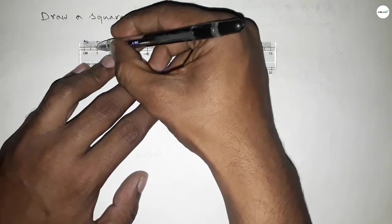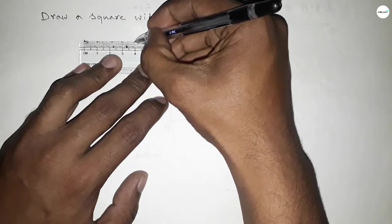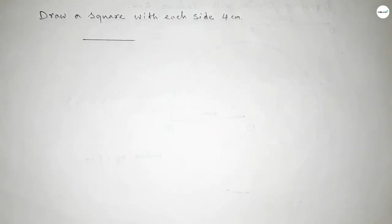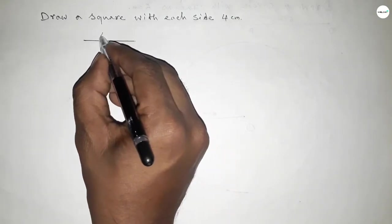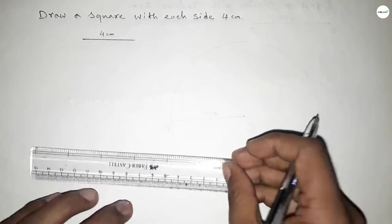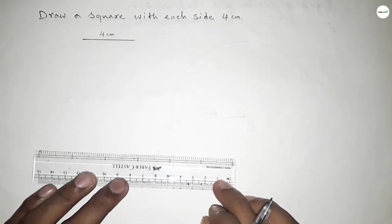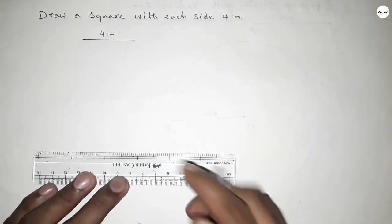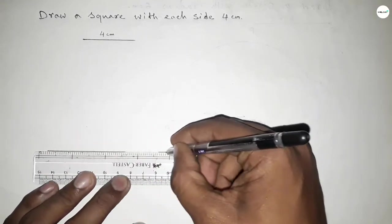First of all we have to draw a length of 4 centimeters. Starting from 0: 1, 2, 3, 4 — so this is 4 centimeters. Now drawing a line of any length.